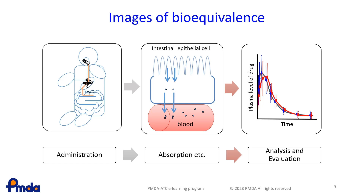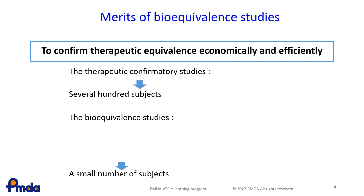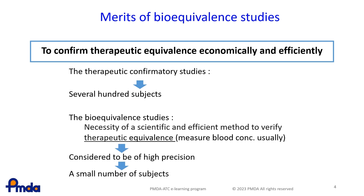We compare the differences in absorption rate and absorbed amount of the active pharmaceutical ingredient, using this information to predict the difference in the therapeutic effect. The therapeutic confirmatory studies are usually highly variable, so several hundred subjects are required to demonstrate statistical validity. On the other hand, bioequivalence studies usually involve a small number of subjects because blood concentration can be measured precisely. For this reason, we can confirm therapeutic equivalence economically and efficiently in bioequivalence studies, which use pharmacokinetics as an indicator.